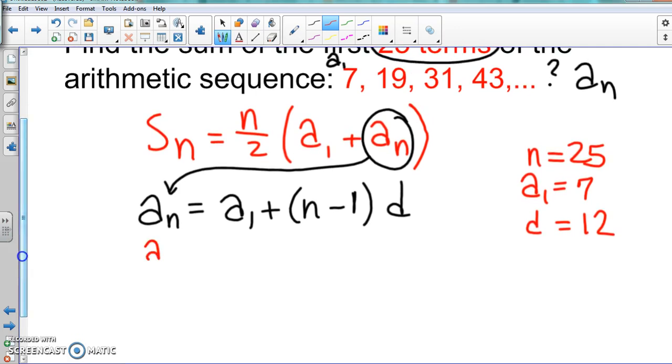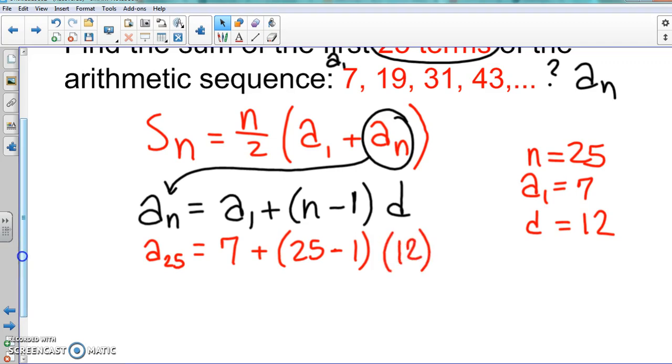Okay, so that's your common difference. Let's go ahead and fill it in and find our a_n. So that's a_25 there because n is 25. a_1 is 7, our n is 25 again on this one.